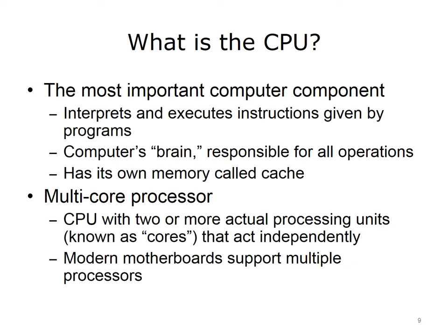The CPU is the most important computer component. It interprets and executes instructions given by programs. The CPU is the brain of the computer and is responsible for the main operations of the entire computer system. While all of the devices connected to a computer can typically send and receive information, they still need the CPU to process the information. The CPU has its own small, very fast memory called the cache, which is usually implemented with synchronous dynamic RAM, or SD RAM. A multi-core processor is a CPU with two or more processing units, known as cores, that act independently. Also, multiple processors can be installed on modern motherboards.